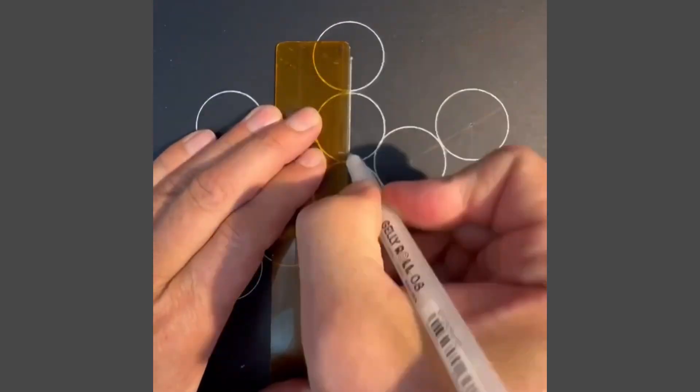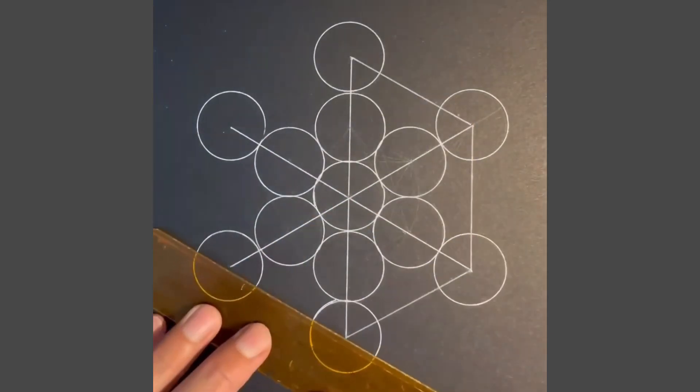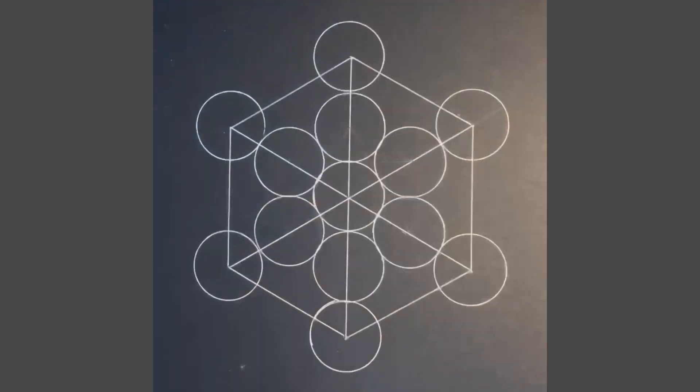You can use the seed of life to help you get them in the right place. Then you draw the centers of each circle so they connect to the center of every other circle.